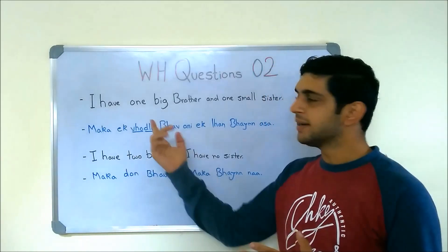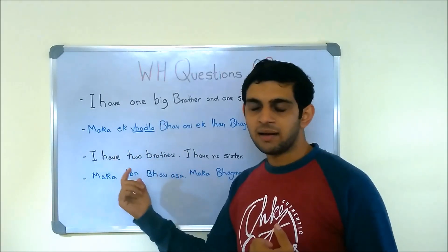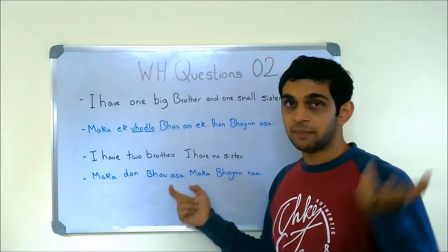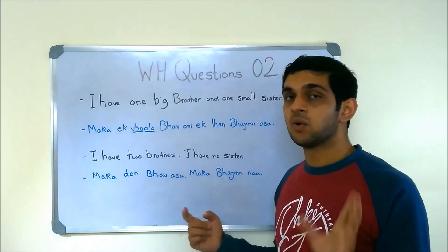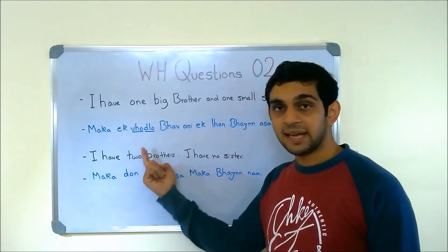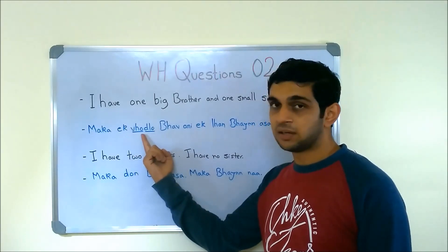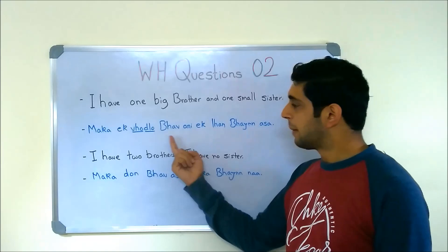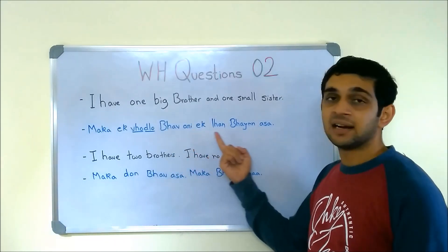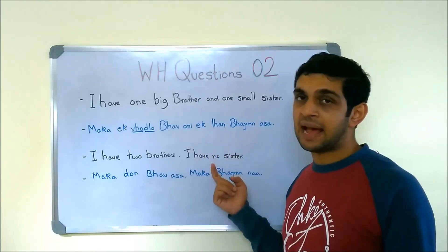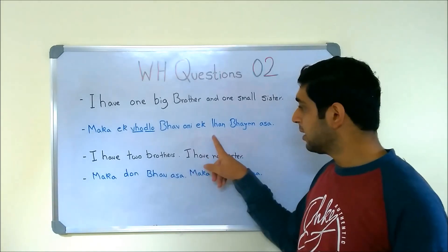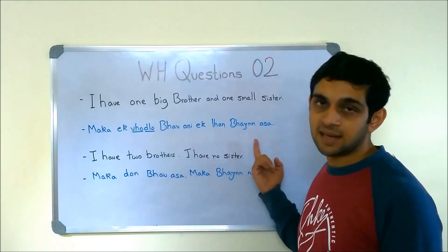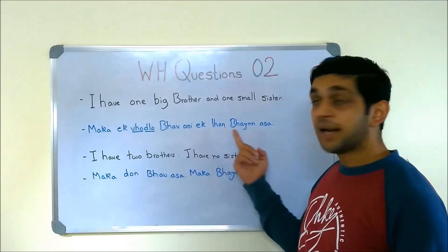MAKA means 'I have'. So: MAKA EK VADLA BHAAV AASA — EK is 'one', same as in Hindi. VADLA means 'big'. ANI EK LHAAN BHAIN AASA — LHAAN means 'small' or 'younger'. So LHAAN BHAIN AASA: you need to write AASA there.